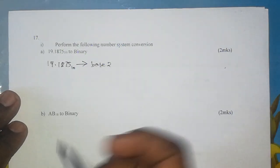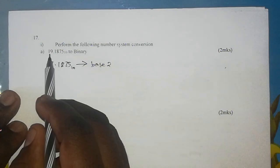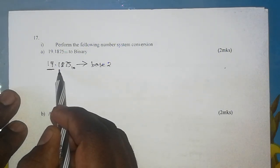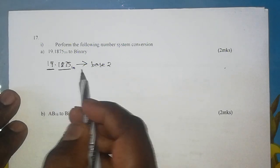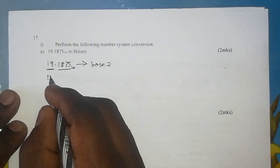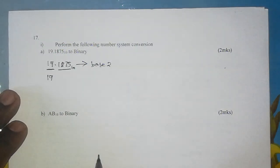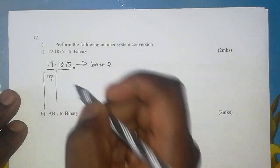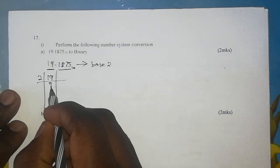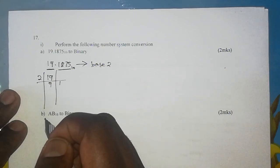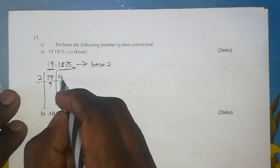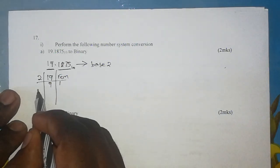The binary system is base 2. To convert such a number, we need to take care of the whole number part and then the decimal point part or the fraction part. We begin with the whole number part. To convert a whole number in decimal to binary, we repeatedly divide it by 2 and note the remainders. We draw a small table: 2 goes into 19 nine times with a remainder of 1, because 2 times 9 is 18, and 19 minus 18 is 1.